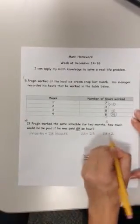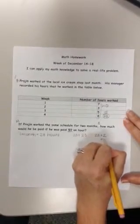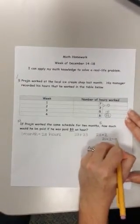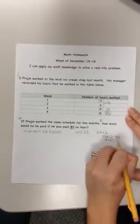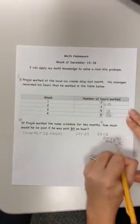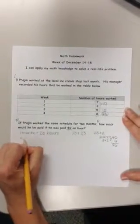So I'm going to multiply 23 times 2 by place value. I'm going to say 20 times 2, that equals 40 hours. And then 3 hours times 2 months equals 6 hours. I'm going to add that up. So he worked a total of 46 hours in two months.